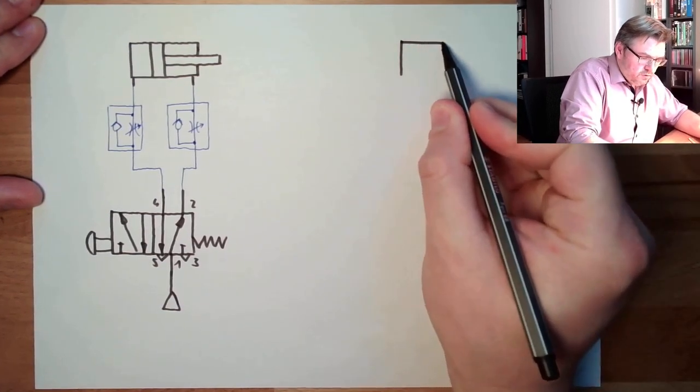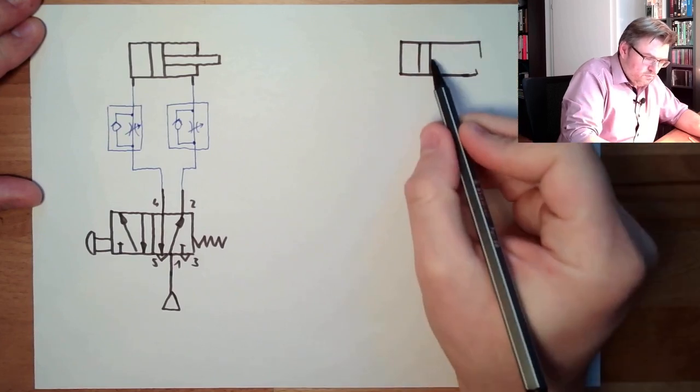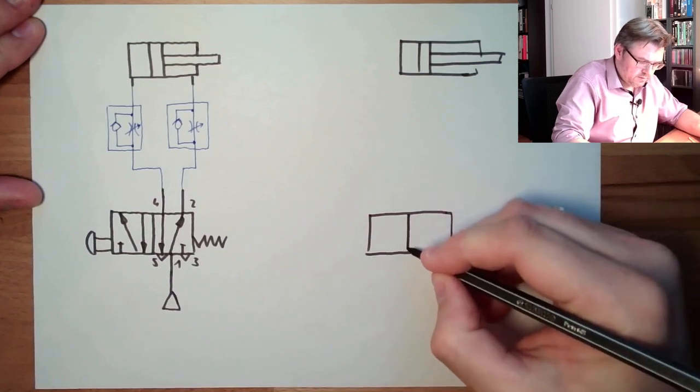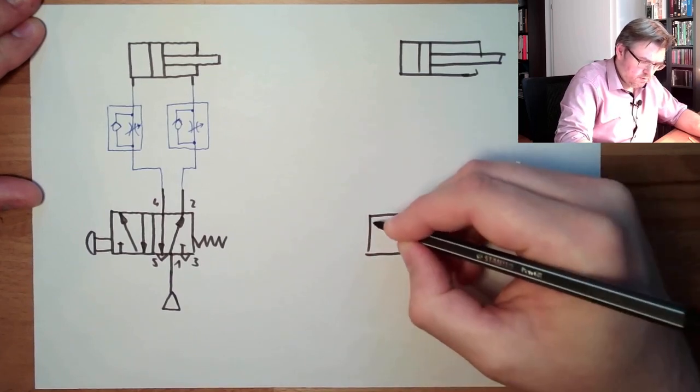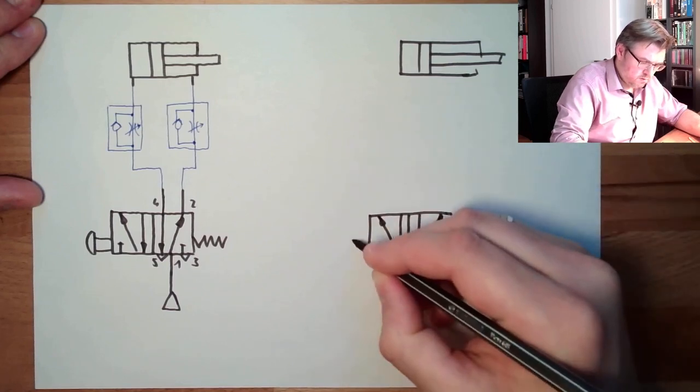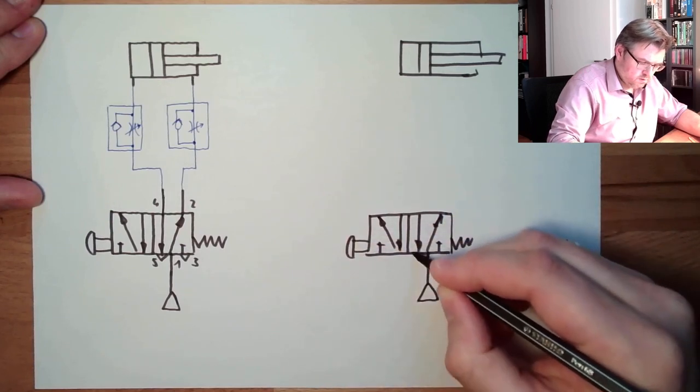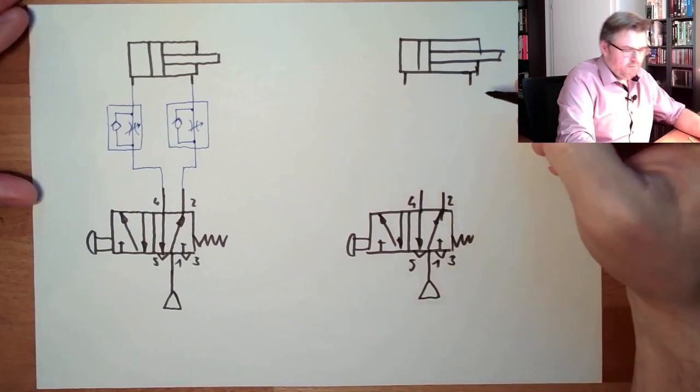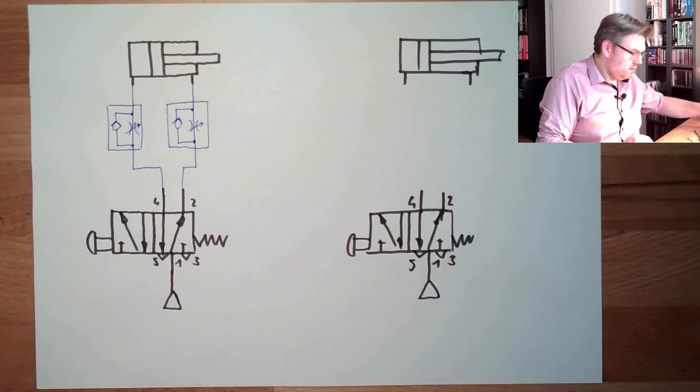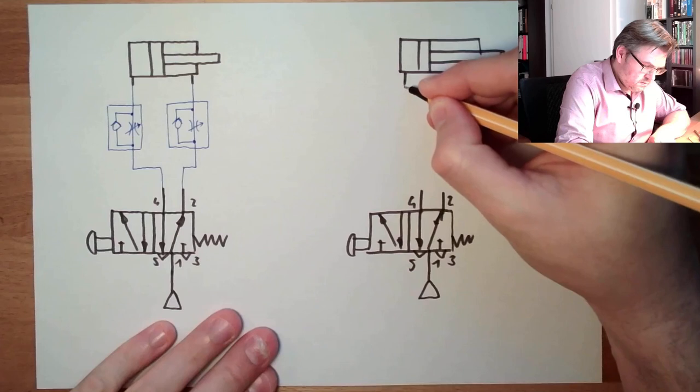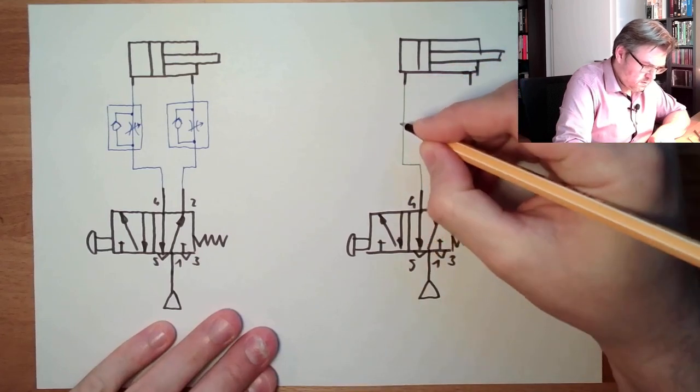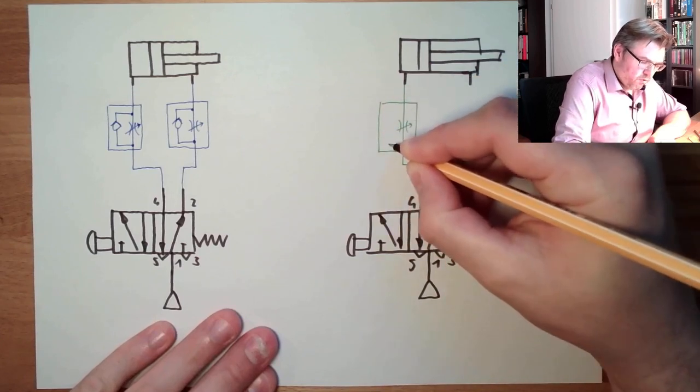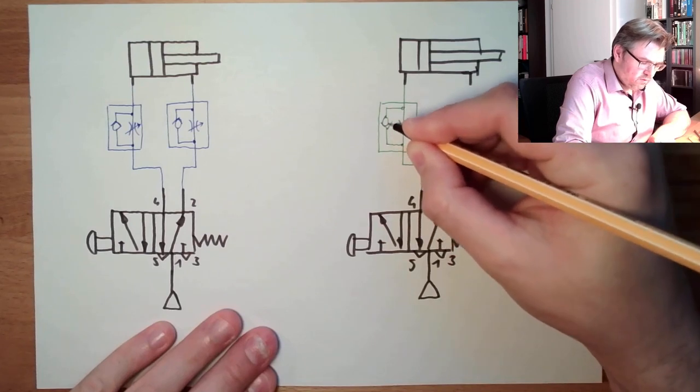Another possibility, I also show you, pretty much the same situation. So the control element is the same, the working element is the same, everything is the same. But this time, we let it pass. We are also throttling it here. Also adjustable. But this time, we are throttling the air which is going out, which is coming out of the cylinder.